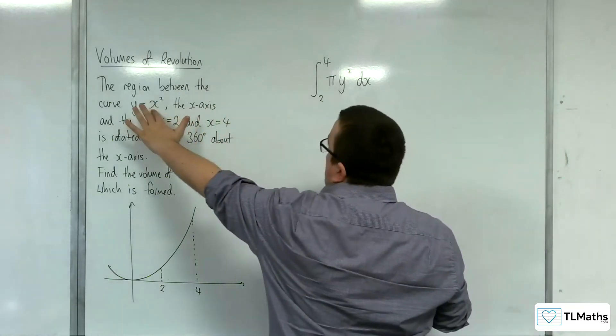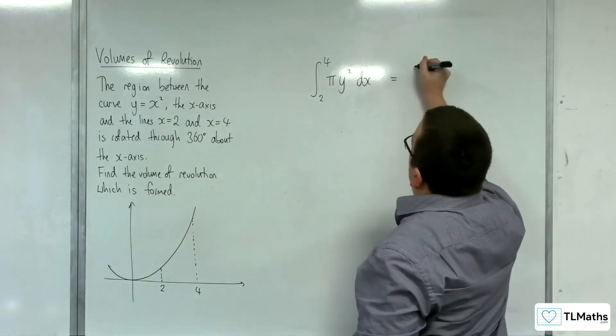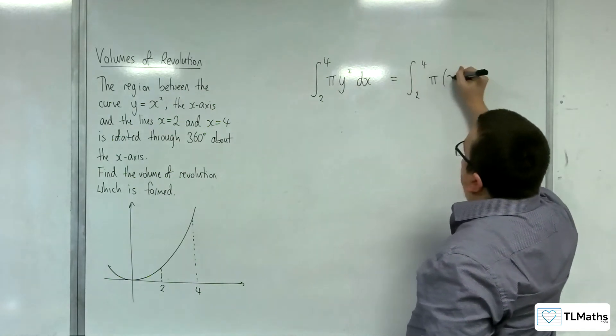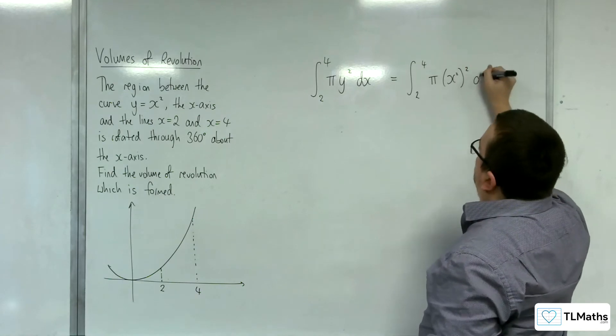Now y is given to us by x squared. So we're going to integrate between 2 and 4 pi times x squared squared dx.